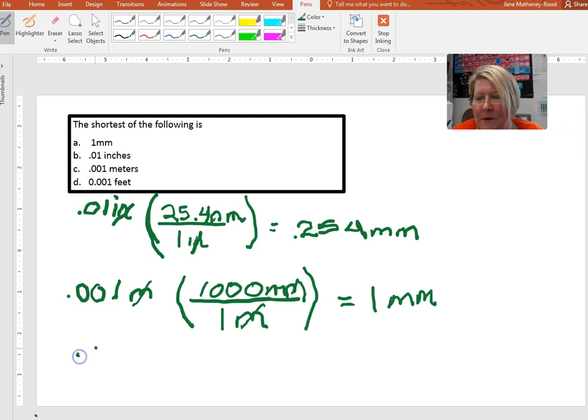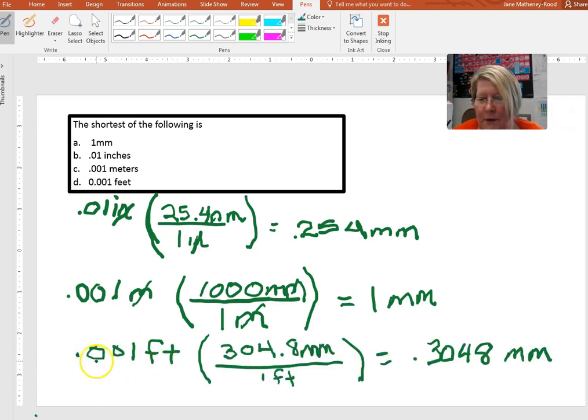Let's do our final example here, 0.001 feet that we're going to convert into millimeters. So here we go, we look up in the table and find that there are 304.8 millimeters in one foot. And so when we do the math, we see feet cancels here and we're left with 0.3048 millimeters.